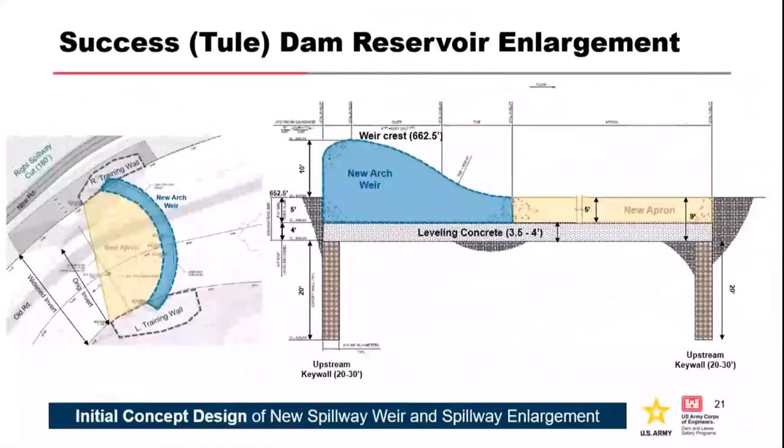The arched weir profile has two deep cutoff trenches — 20-plus feet — drilled with caisson-type rigs. They have four feet of leveling concrete and then five feet of rock excavation, so nine feet total. This is what was on the table when requested to go through the risk-informed design process.